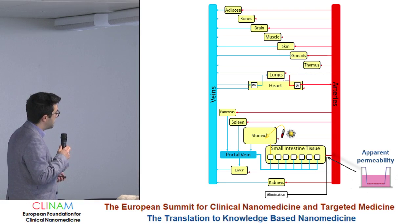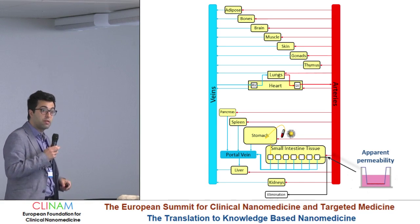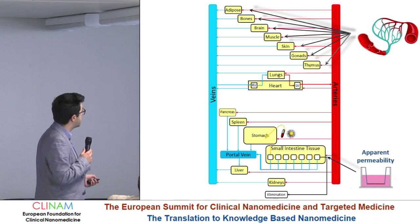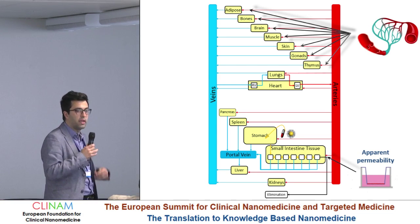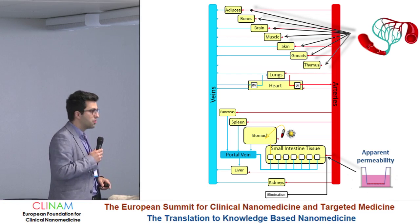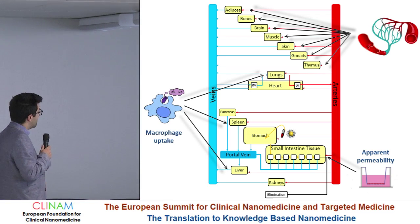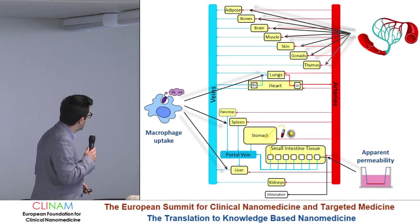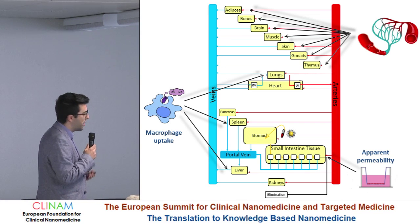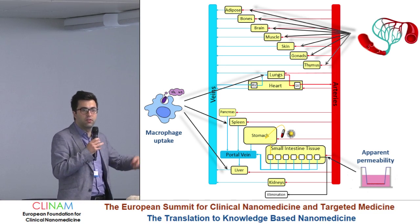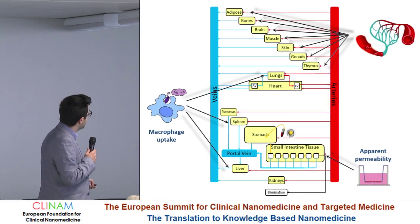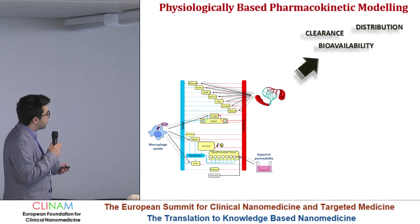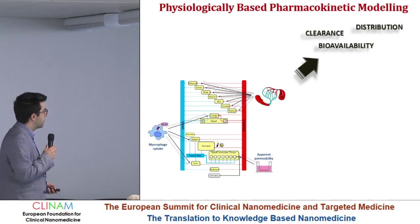We can run specifically designed experiments to measure apparent permeability through the intestinal monolayer using CACO2 cells. Or if we have information related to the size of the nanoparticle and charge, we can make some assumptions related to penetration through the capillary fenestration. And then we can run experiments to measure macrophage uptake, and then potentially predict accumulation in organs and tissues such as the liver, the spleen, and the lungs.